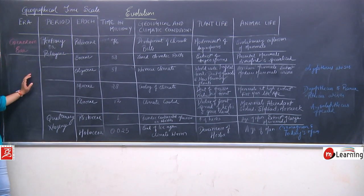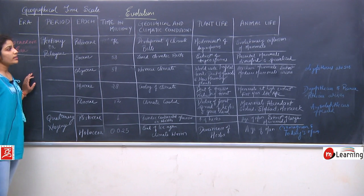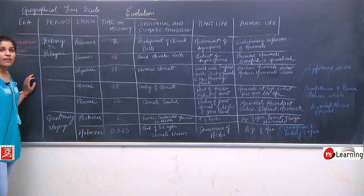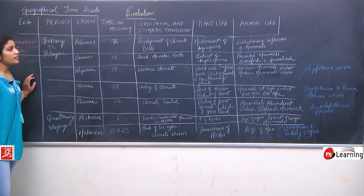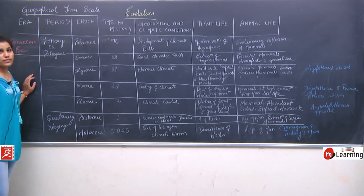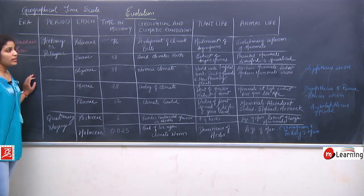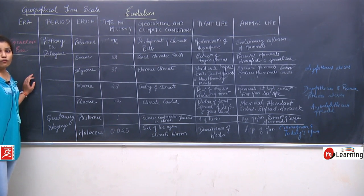The second epoch is Eocene, around 58 million years ago. In the earlier Paleocene epoch, climatic beds were starting to develop. Now in the Eocene epoch, the zoned beds have been established in the environment. In plant life, there was extinction of angiosperms — those angiosperms that arose in the Jurassic period were now extincted and were dominant in the Paleocene epoch. In animal life, placental mammals became diversified and specialized.